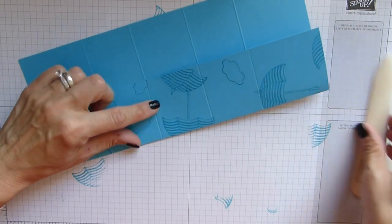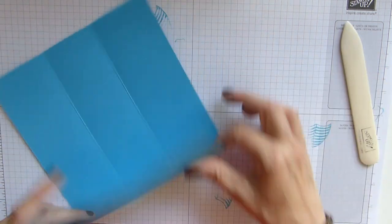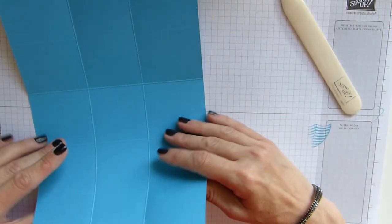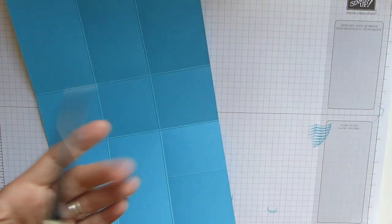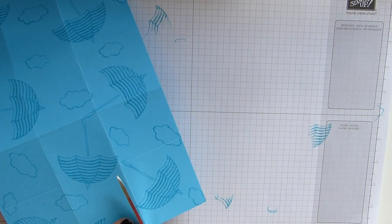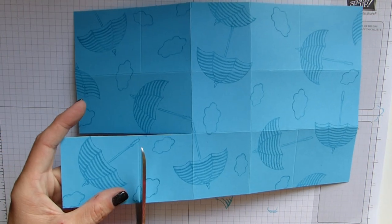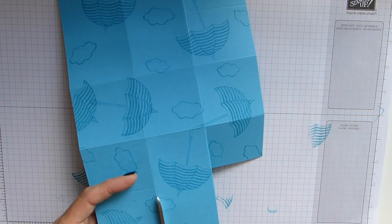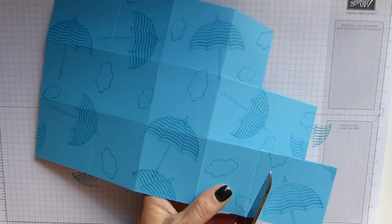Let's grab our bone folder and we only have four score lines here that we need to burnish. Now I'm going to grab my big scissors because I find it easier. We're literally cutting down the whole length of these long panels and then just across that score line that we did extra. We just do that on all four sides.